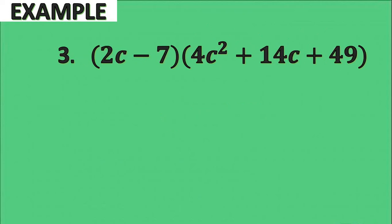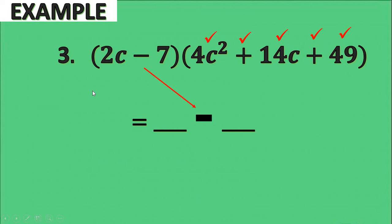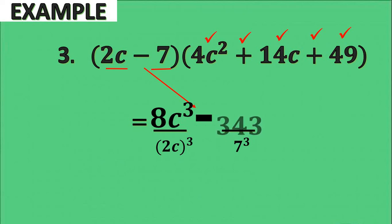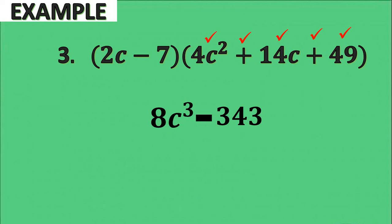For our third example: the quantity 2c minus 7 times the quantity 4c squared plus 14c plus 49. Checking the form: the square of 2c is 4c squared, the square of 7 is 49, and the product of 2c and 7 is 14c. We have a plus sign in the trinomial, which is opposite to the minus sign on the binomial. We are good to go. The operation is minus. Cubing 2c: the cube of 2 is 8 and the cube of c is c cubed, giving 8c cubed. Cubing 7: 7 times 7 times 7 equals 343. Therefore, the answer is 8c cubed minus 343.